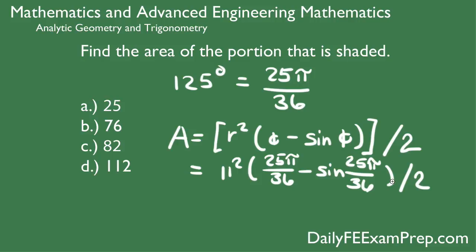What I did was I first found out what 25π over 36 was, then I subtracted that from sine 25π over 36. Then I multiplied that by 11 squared and divided that by 2. So I did it in three separate steps to make sure I was doing the right thing.